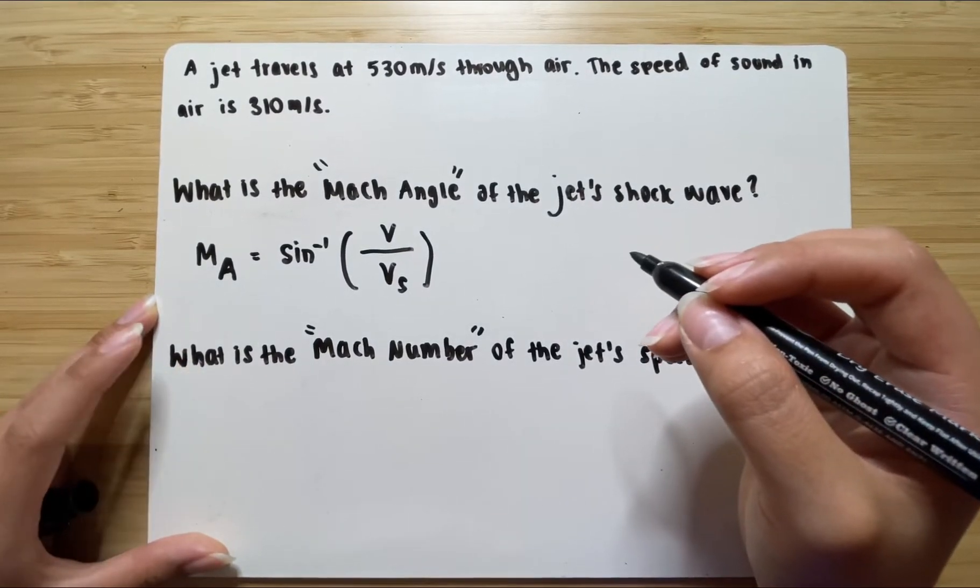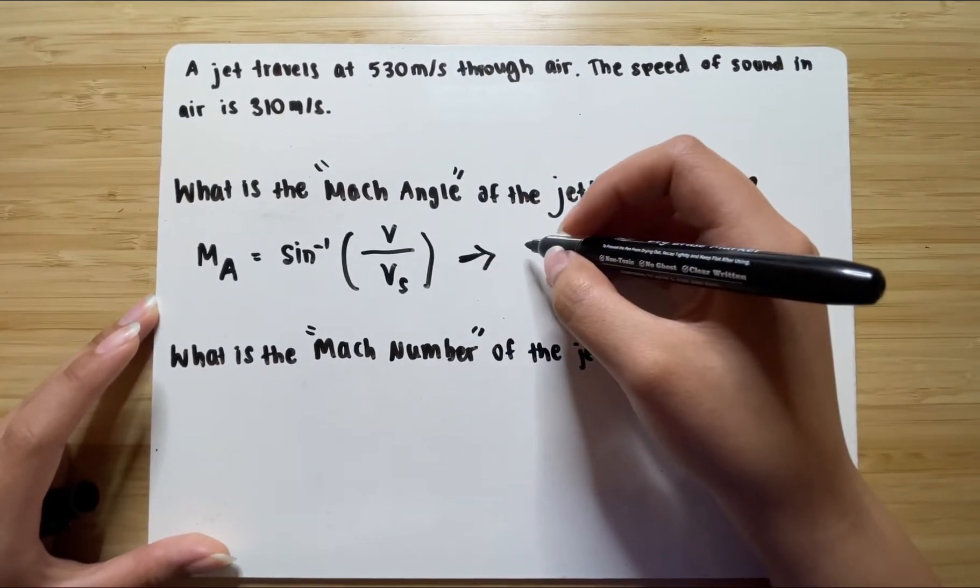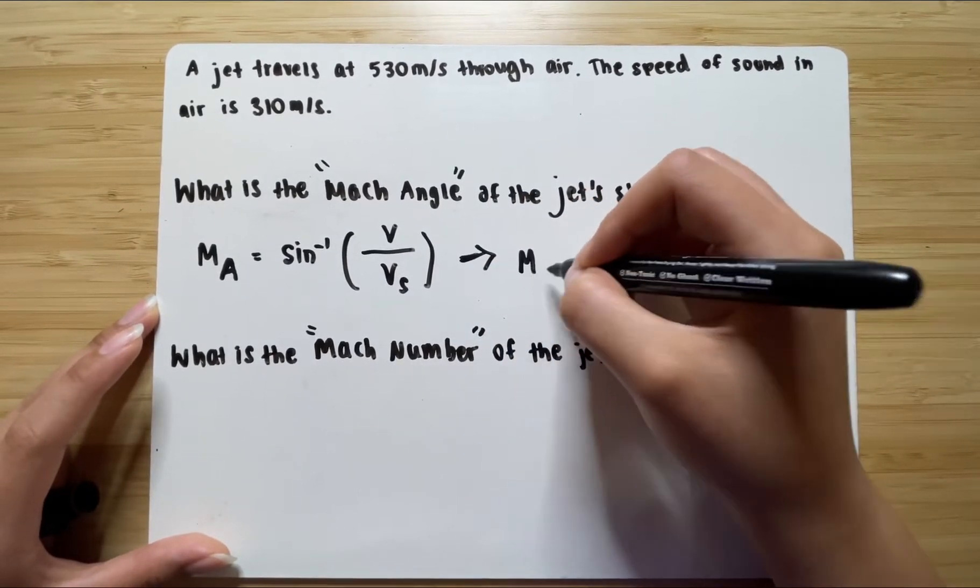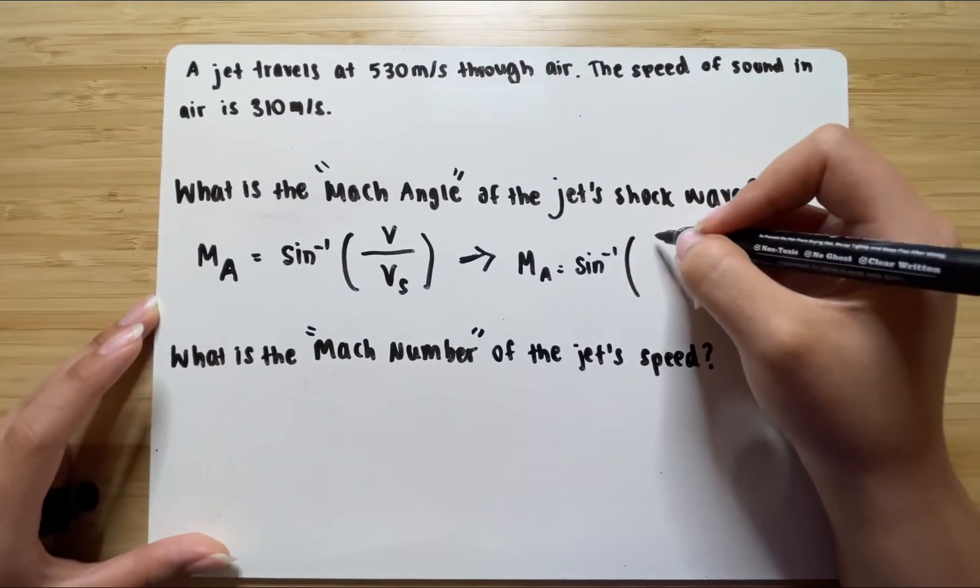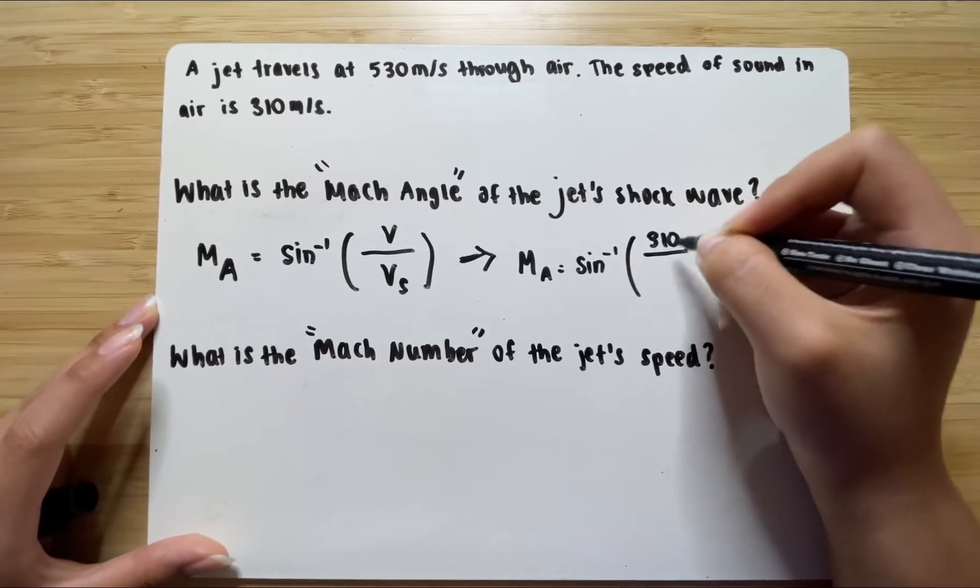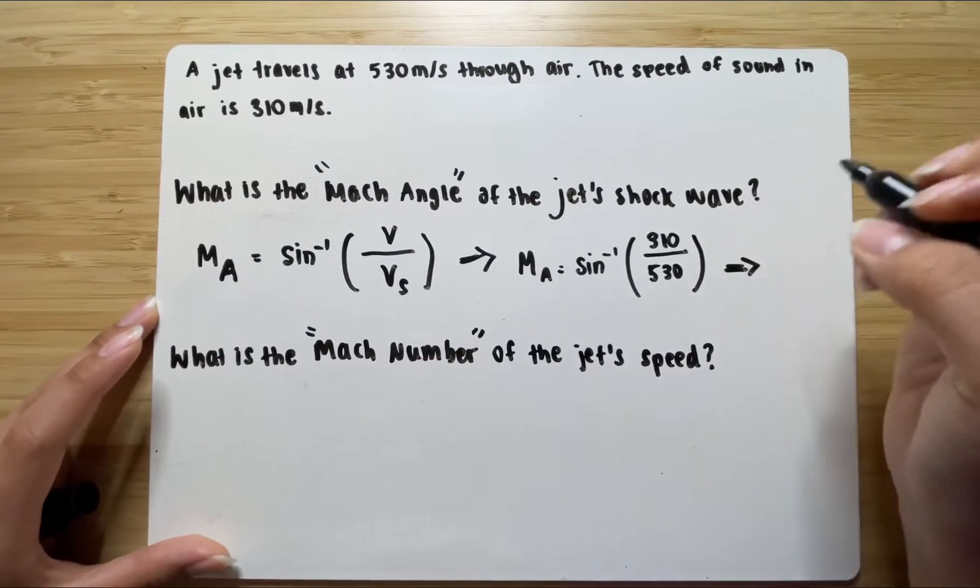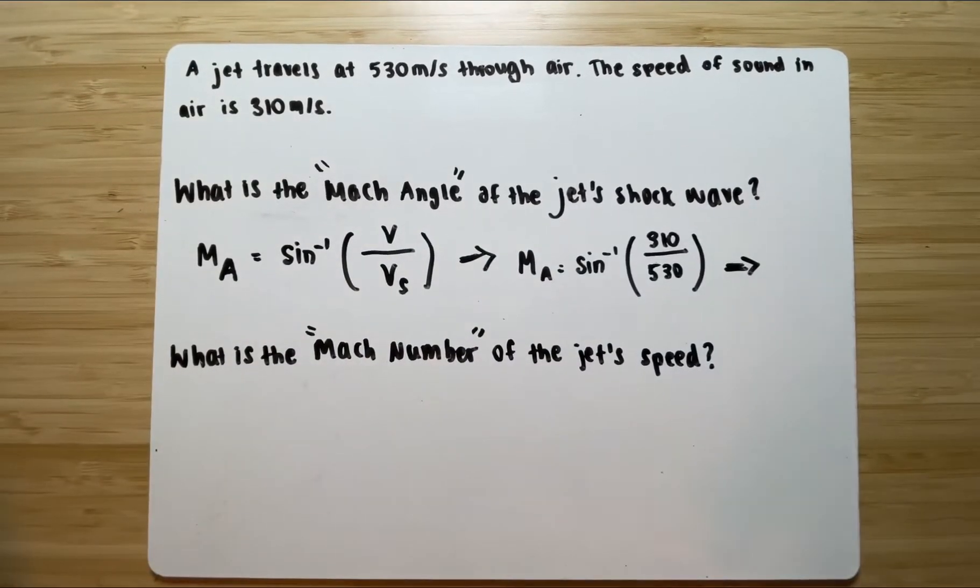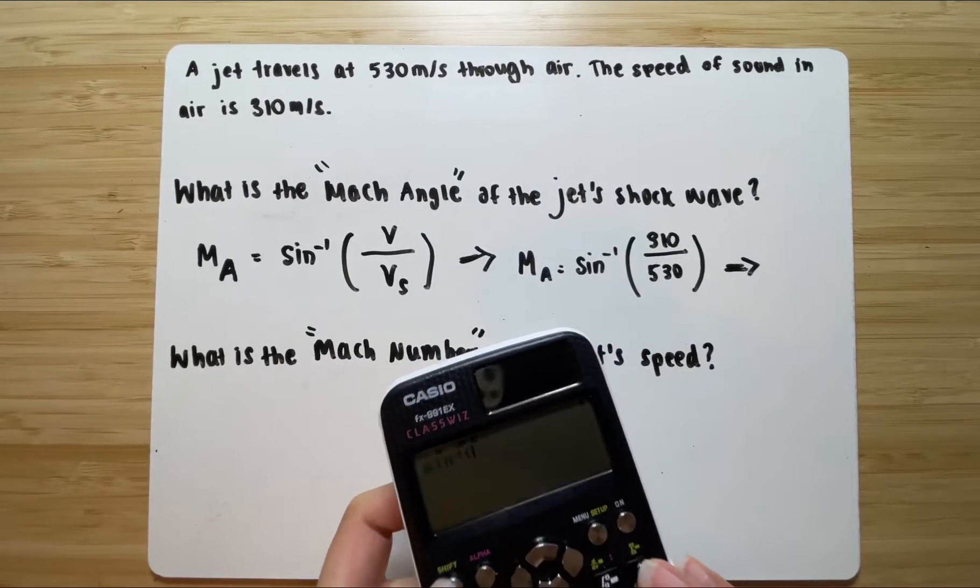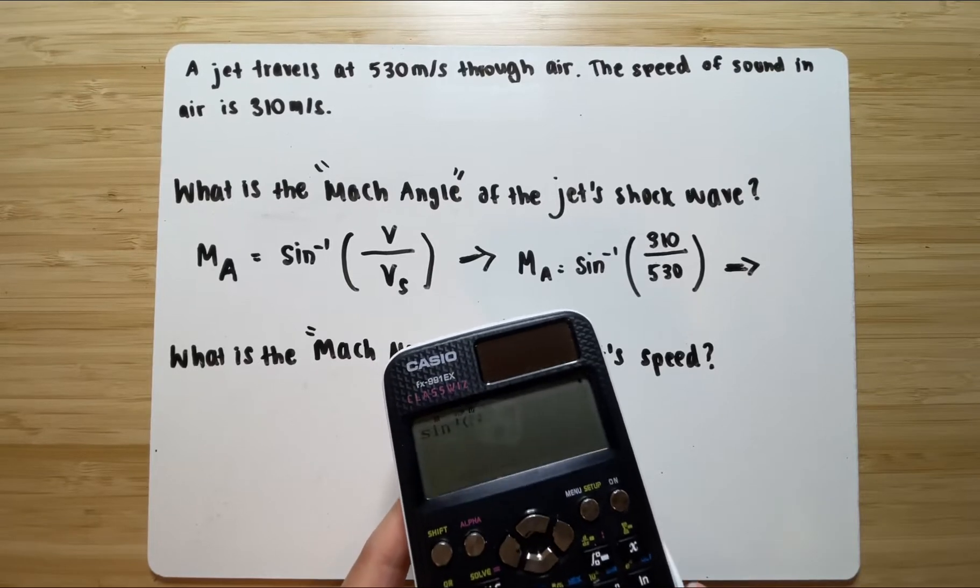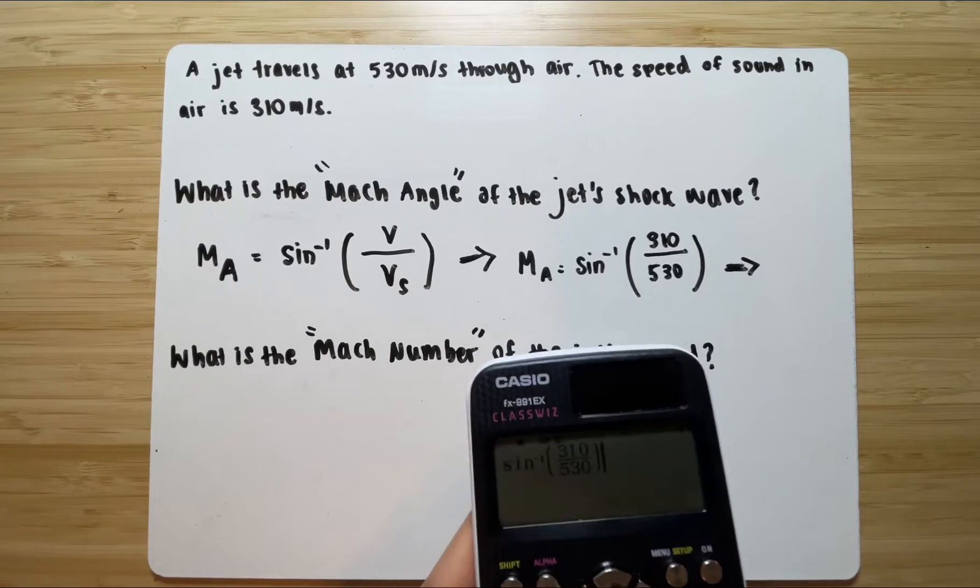Now we plug in what we know. We know that the speed of sound is 310 and the speed of the source is 530. So we plug that into a calculator. Sine inverse, 310 over 530. Make sure your calculator is in degrees.